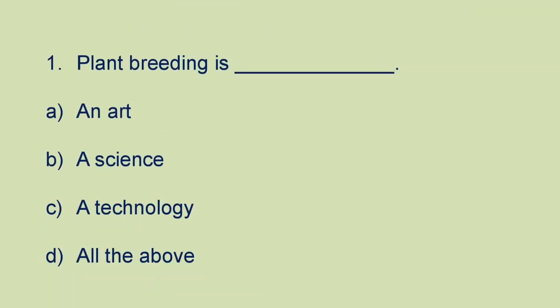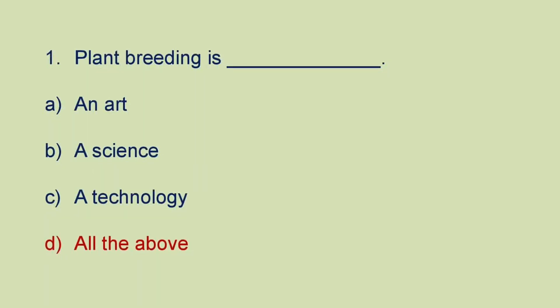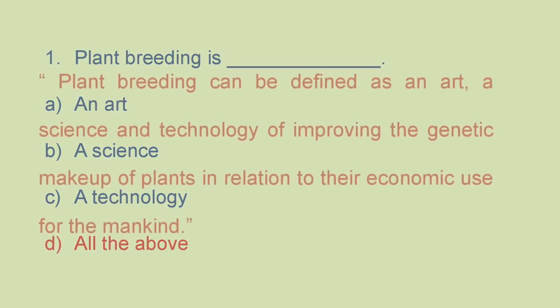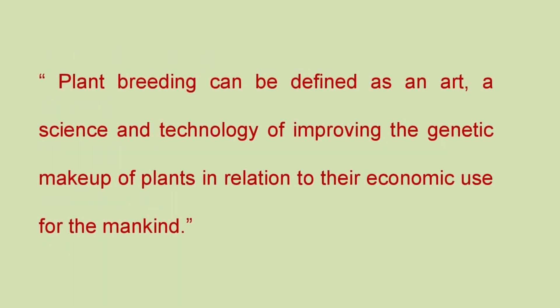The first question is: plant breeding is A) an art, B) a science, C) a technology, or D) all the above. The answer is plant breeding is an art, science and technology — so it is D) all the above. Plant breeding can be defined as an art, a science and technology of improving the genetic makeup of plants in relation to their economic use for mankind.